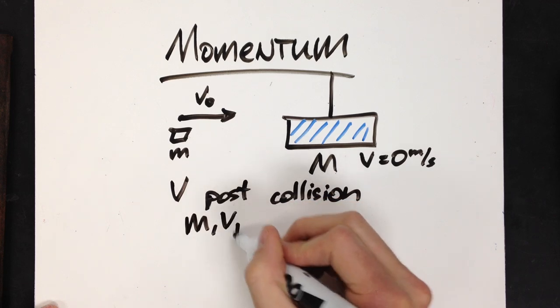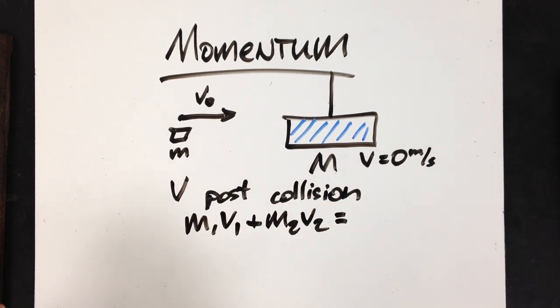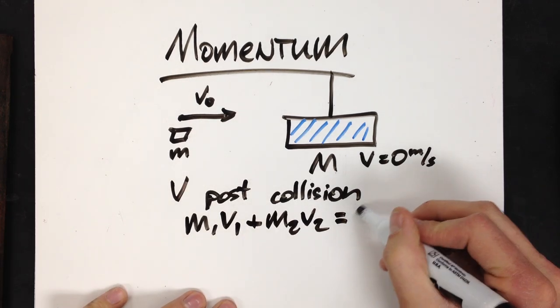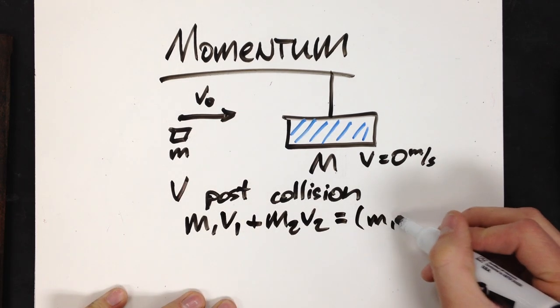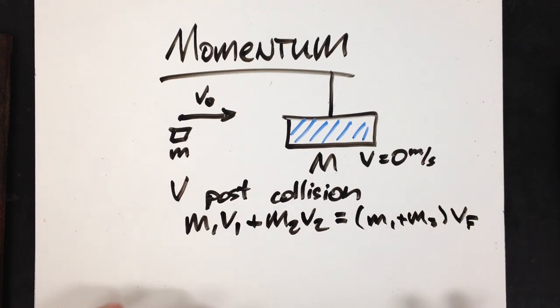So, my initial momentum, m1 v1 plus m2 v2, is going to equal my final momentum, which is the momentum of my bullet block system.